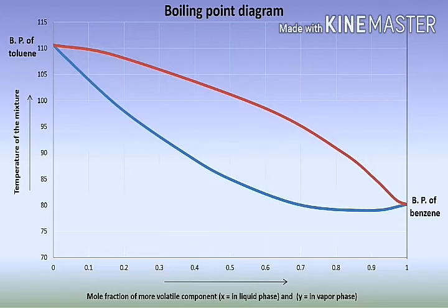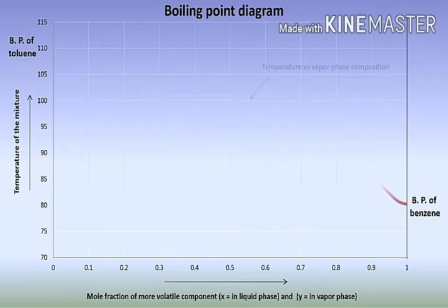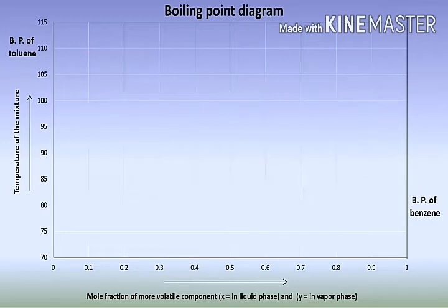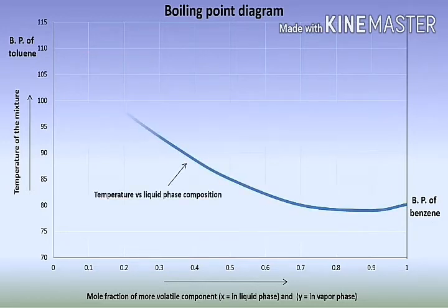In the diagram, the upper curve provides the temperature vs. vapour composition — that is, the T vs. Y relationship. The lower curve provides the temperature vs. liquid composition — that is, the T vs. X relationship.